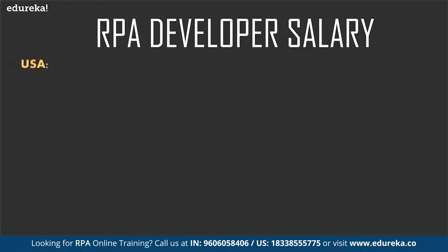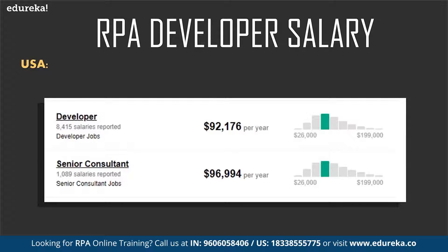Looking at the stats for the United States, according to Indeed.com, estimated from around 18,000 employees and job advertisements over the past 36 months, the average salary of an RPA developer ranges from around $92,000 per year for a developer to $96,000 per year for a senior consultant. That's a huge amount, so for anyone willing to shift their career from testing or non-IT backgrounds to automating front-office and back-office processes, RPA is the career to choose.